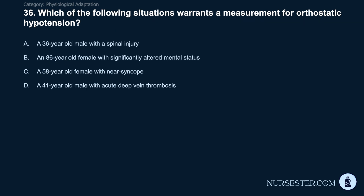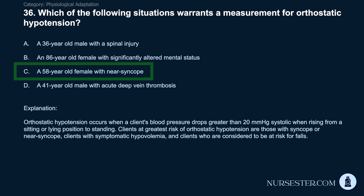Question 36: Which situation warrants a measurement for orthostatic hypotension? A) A 36-year-old male with a spinal injury. B) An 86-year-old female with significantly altered mental status. C) A 58-year-old female with near syncope. D) A 41-year-old male with acute deep vein thrombosis. Correct answer: C. A 58-year-old female with near syncope. Orthostatic hypotension occurs when blood pressure drops greater than 20 mmHg systolic when rising from sitting or lying to standing. Clients at greatest risk include those with syncope or near syncope, symptomatic hypovolemia, and those at risk for falls.